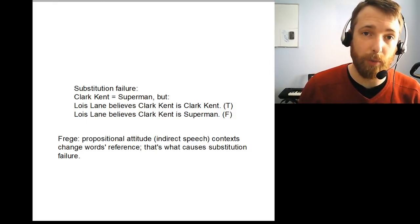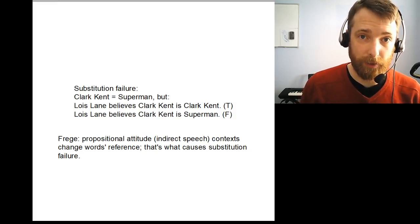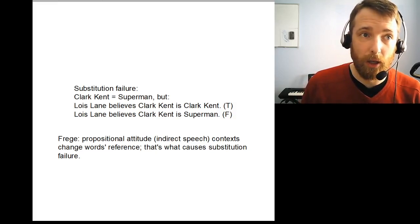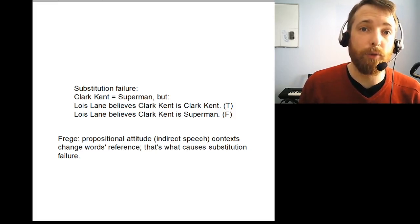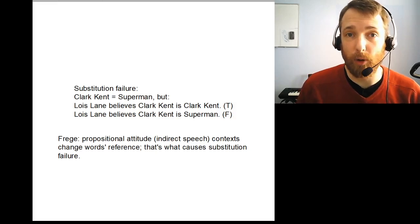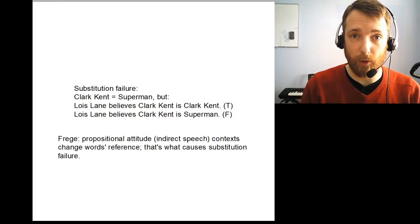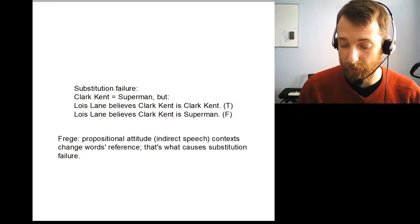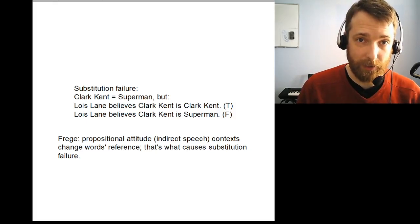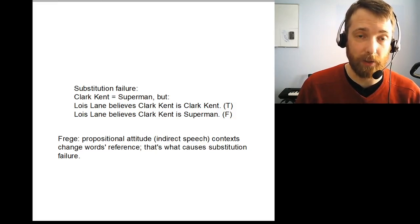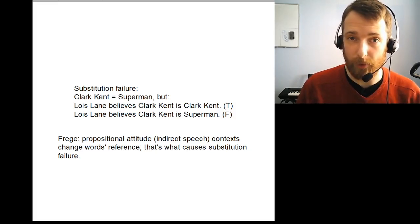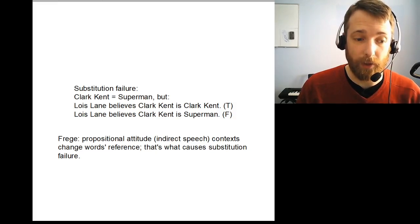We started off everything by reading Frege on sense and reference. From there, we can think of two problems that Frege addresses that the rest of our readings branch off and look at separately. The first one has to do with empty names like Odysseus, or empty definite descriptions like the present king of France. Russell, Strawson, and Donilon all address that sort of problem.